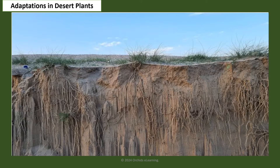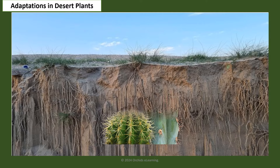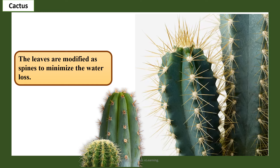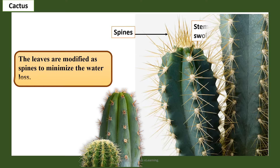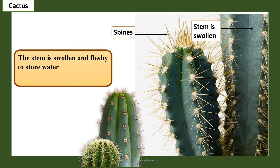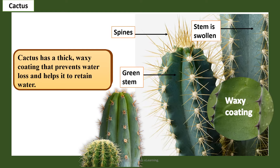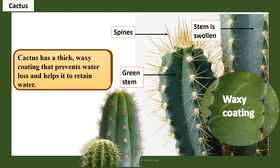Plants in deserts have developed adaptations for hot and dry climates. Most plants have long roots that go deep into the soil in search of water. In the cactus, leaves are modified as spines to minimize water loss, the stem is swollen and fleshy to store water, and the stem is green to make food for the plant. Cactus also has a thick waxy coating that prevents water loss and helps it retain water.